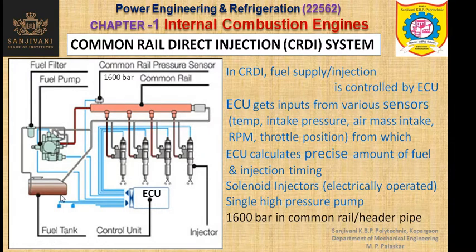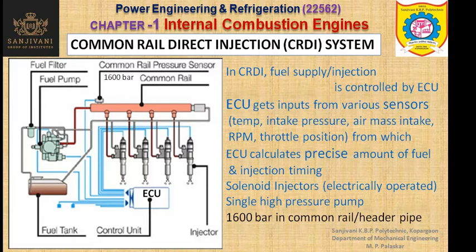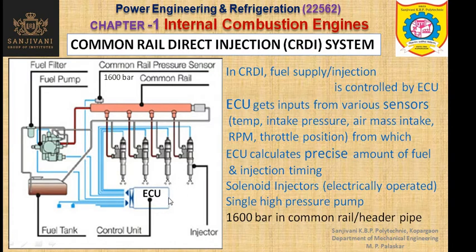Now let us study the working. First of all, the various sensors give input to the electronic control unit. Here you can see injectors 1, 2, 3, 4 — these are the electronically controlled injectors. They are not controlled mechanically but electronically by the ECU. The injection timing and the opening and closing of the injectors are also sensed as well as controlled by the electronic control unit. The ECU will also sense the pressure via the common rail pressure sensor.